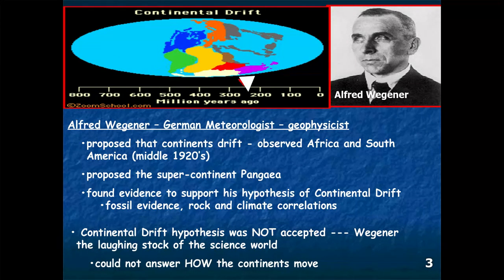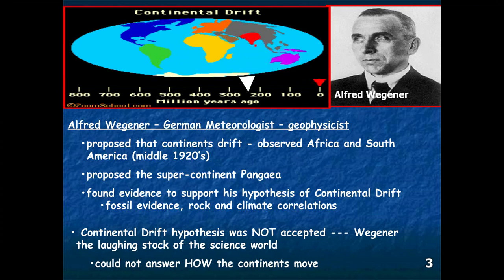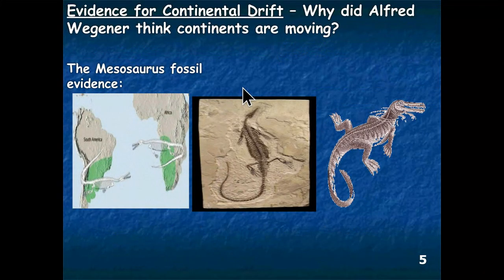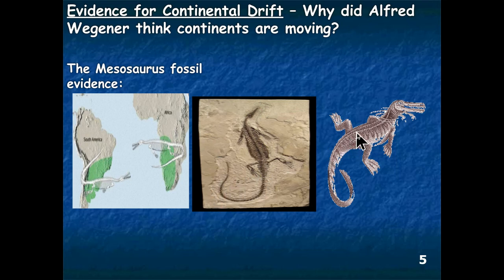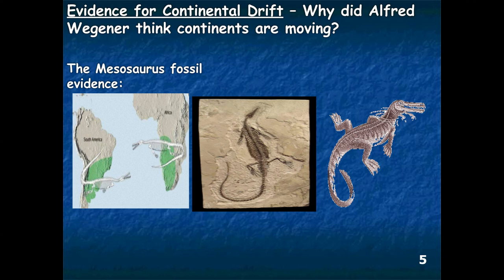We'll go through the evidence that Alfred Wegener looked at: fossil, rock, and climate correlations. The first line of evidence comes in the way of fossil evidence. A fossil known as the Mesosaurus takes on a lizard-alligator type structure. What Wegener discovered is that the Mesosaurus fossil existed on South America and also on Africa. So you have to ask: how did this Mesosaurus occur both on South America and Africa?